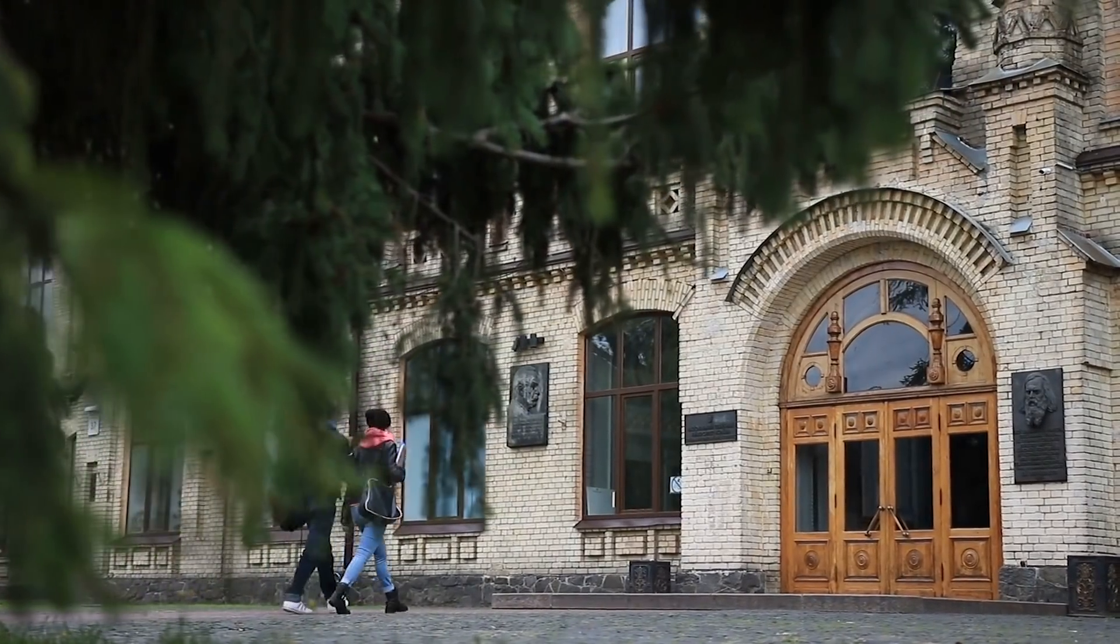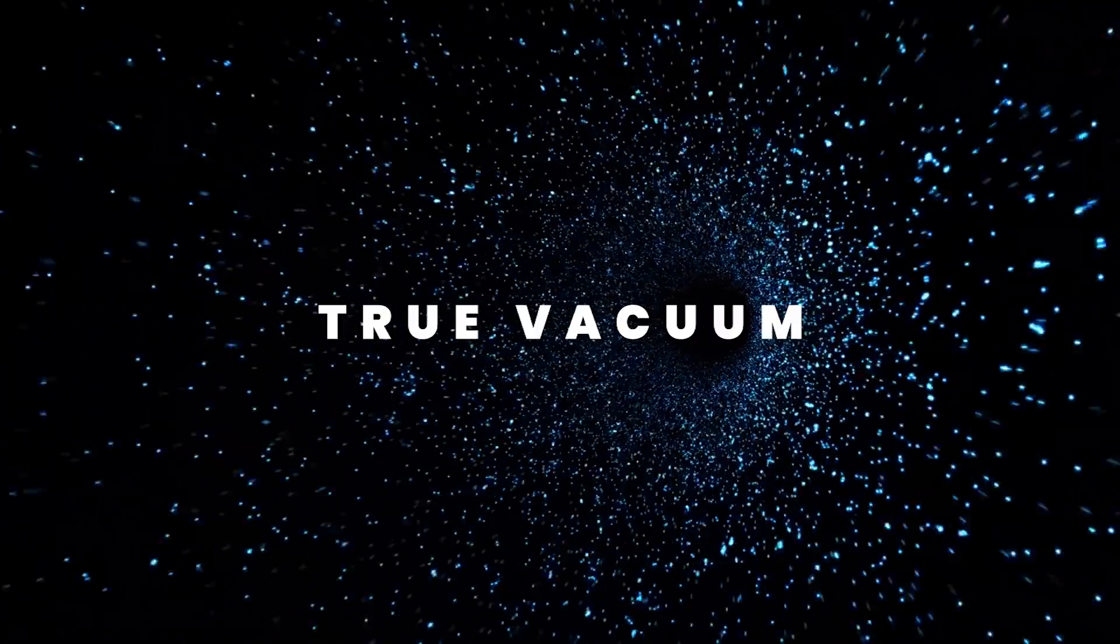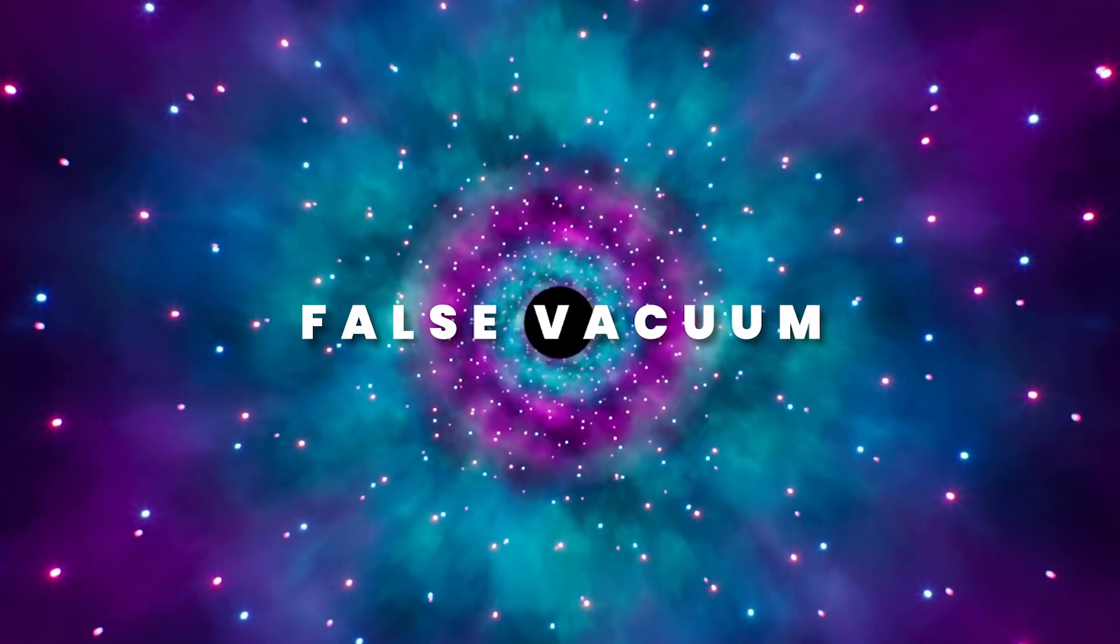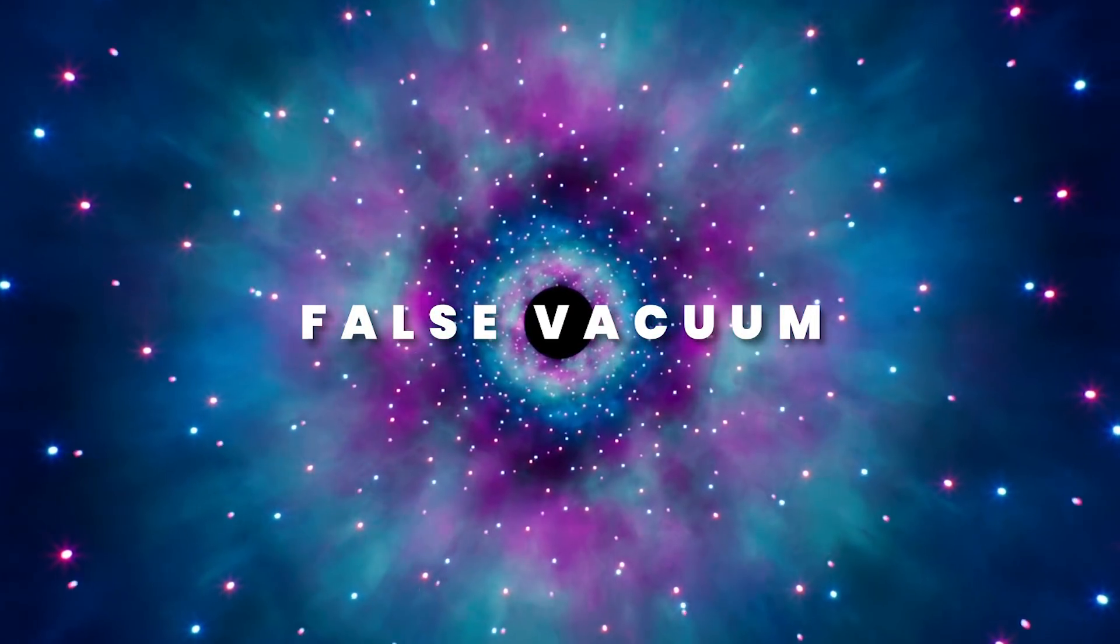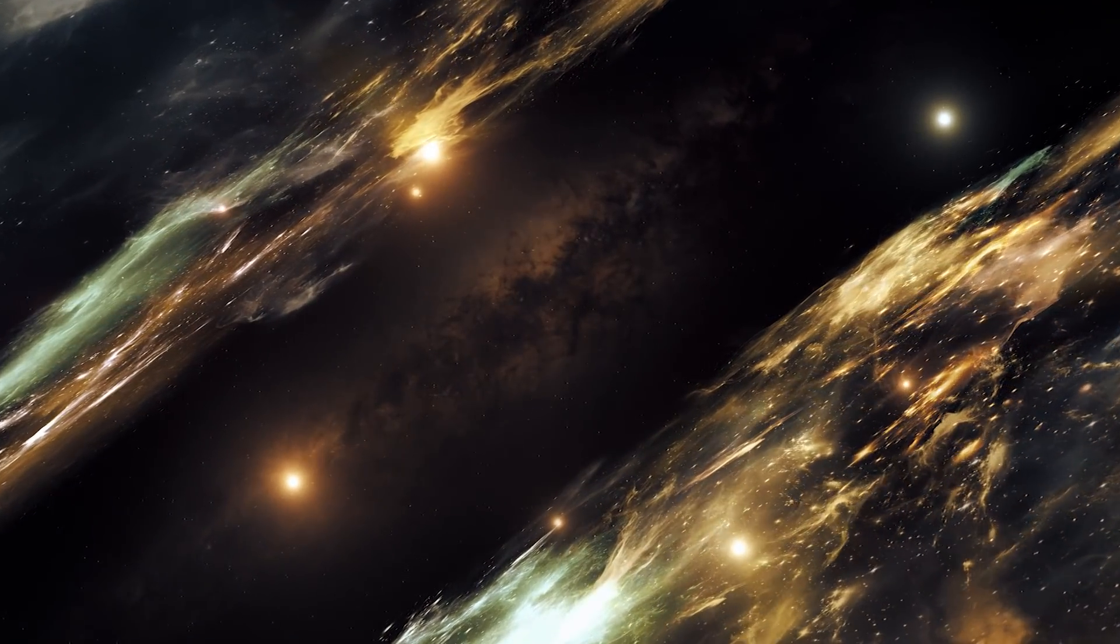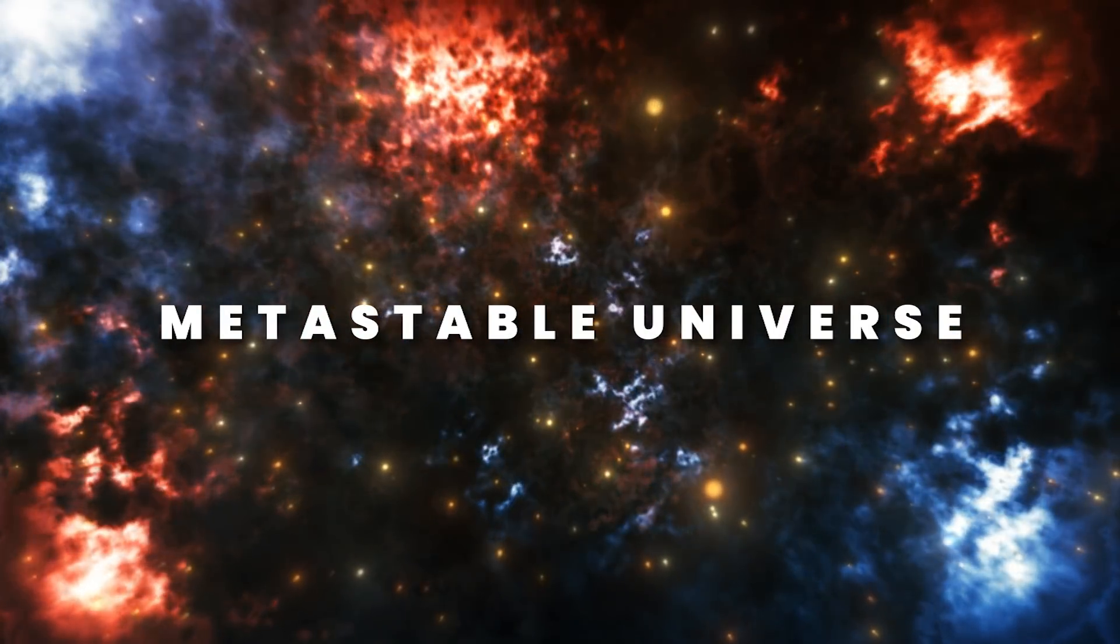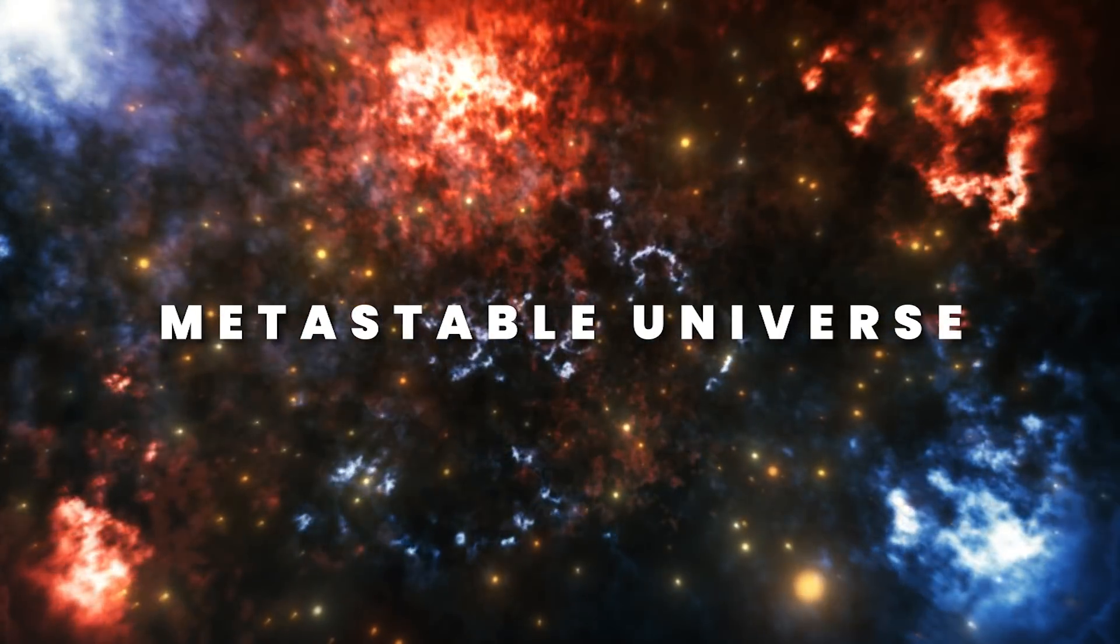Physicists believe there are two types of vacuum. True vacuum is a stable, lowest energy state possible. False vacuum only pretends to be true, but still has a lot of energy to get rid of. And some scientists think we might just live in such a universe. They call it a metastable universe, meaning it could be easily thrown off balance.